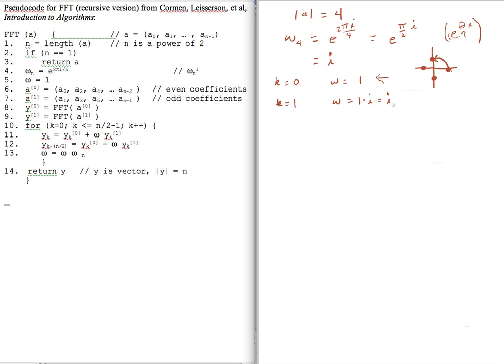When we do our update for k = 1, we'll use i right here, and then we'll use -i for this y coefficient. Thank you for listening.